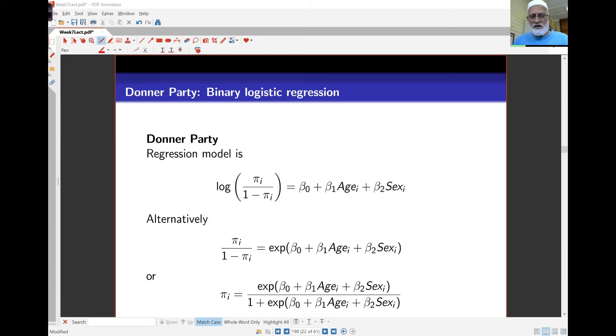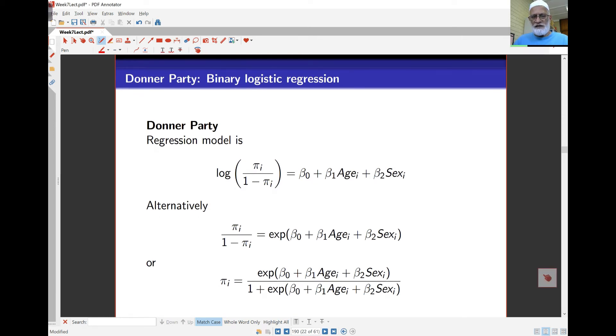To fit this regression model, we're looking at an equation of this kind. Log of pi i over 1 minus pi i is beta naught, the intercept, beta 1 times the age of the particular person, and beta 2 times the sex of the person.